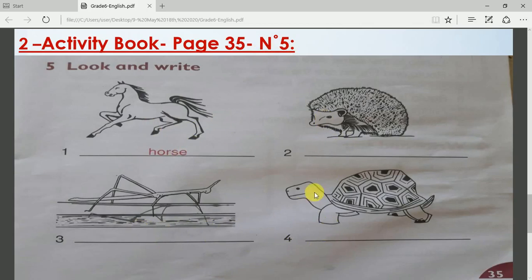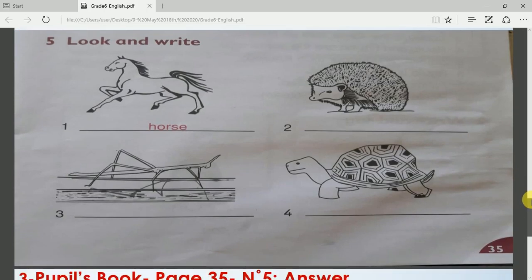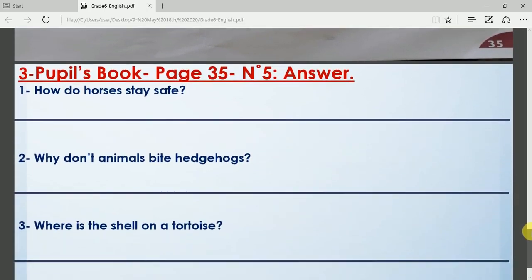Without looking at the book, at the text, or at the previous exercise, you have to write them by yourselves. What is this animal, this one, and this one? When you finish, you go back to your English copybook.